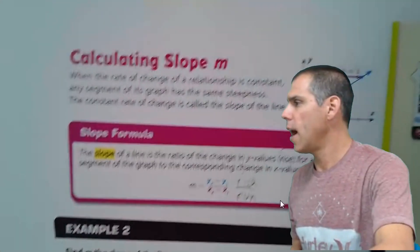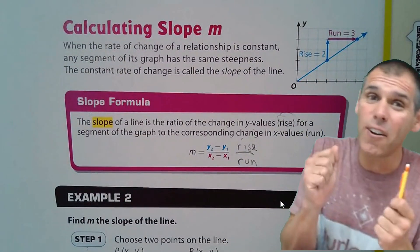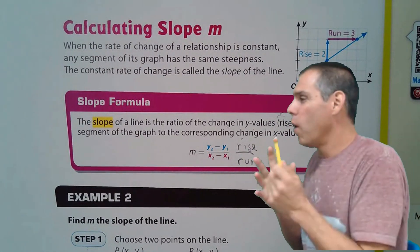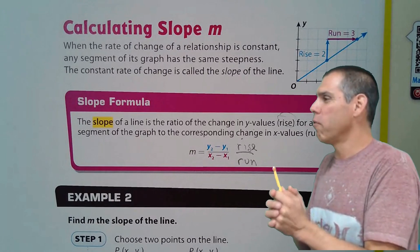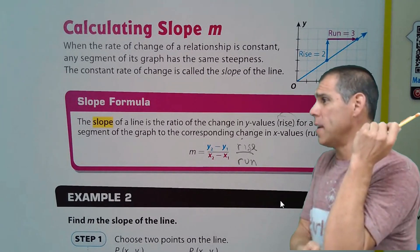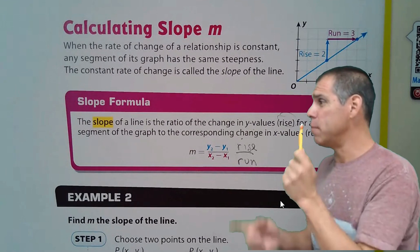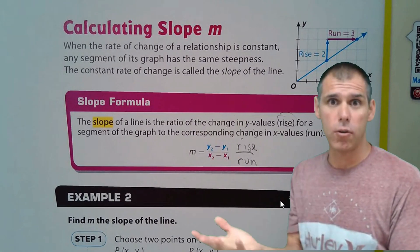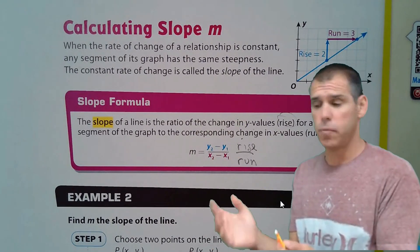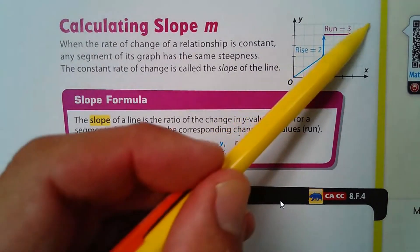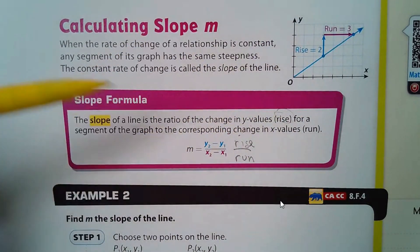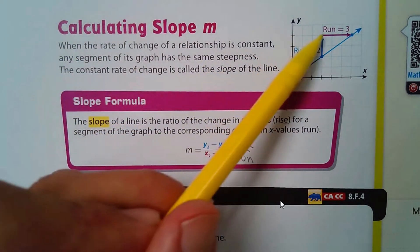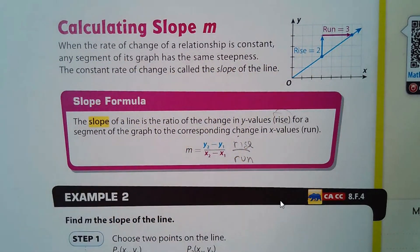Next, calculating slope. For some reason, slope is called m rather than s. When the rate of change of a relationship is constant, any segment of its graph has the same steepness, which means the rate of change is the same — it's a visual way of looking at rate of change. The constant rate of change is also called the slope of the line. Steepness, rate of change, and slope are all the same thing.